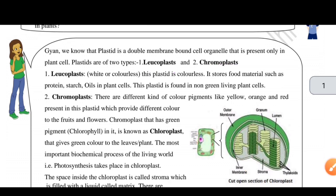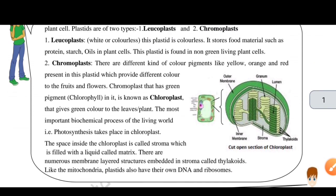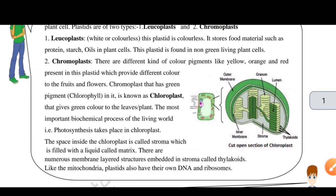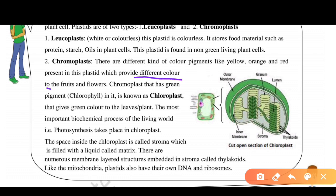Next is Chromoplast, which plays the main role in today's worksheet. What is Chromoplast? It has different pigments such as yellow, orange, and red. These pigments give different colors to fruits and flowers in plants.